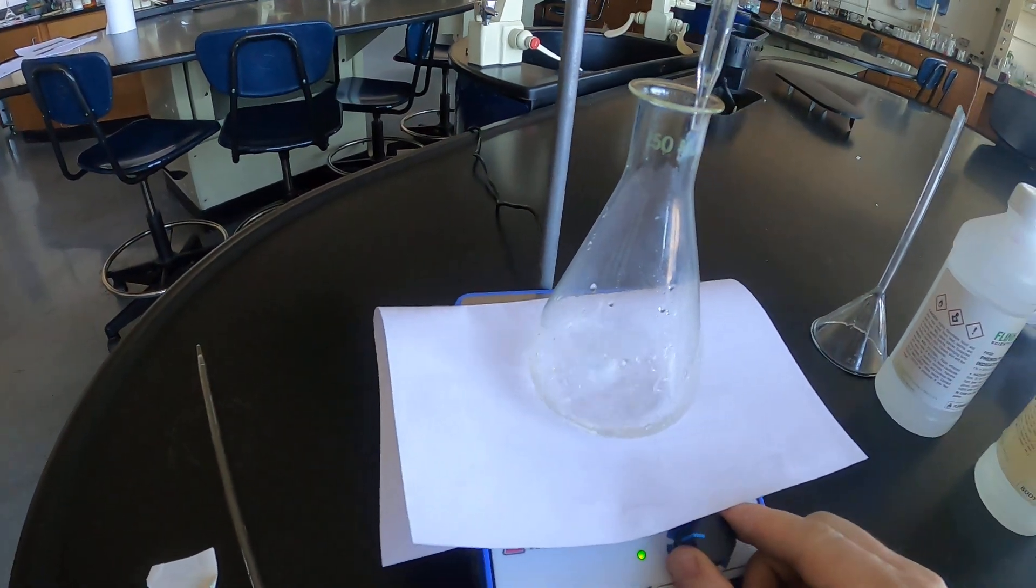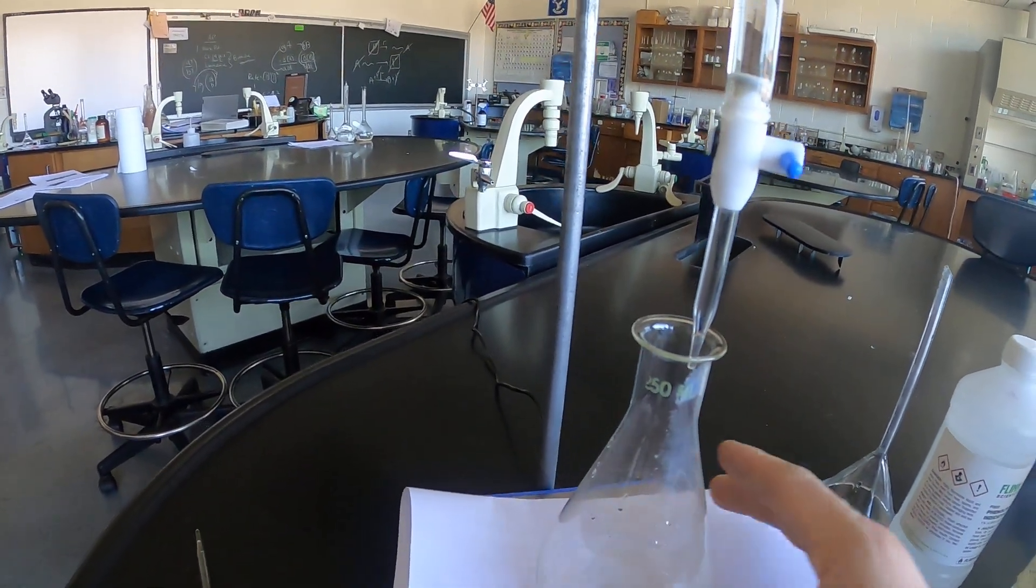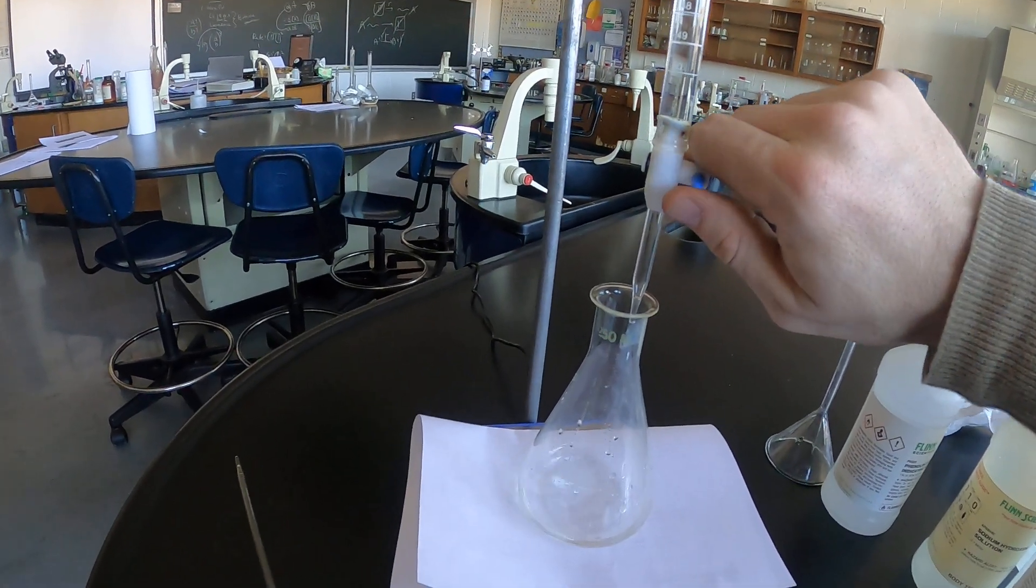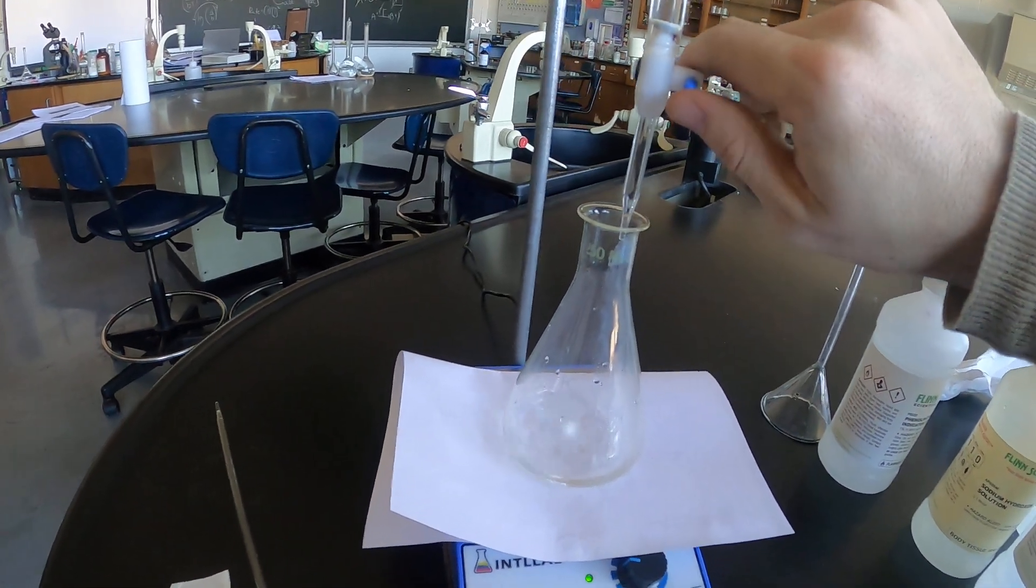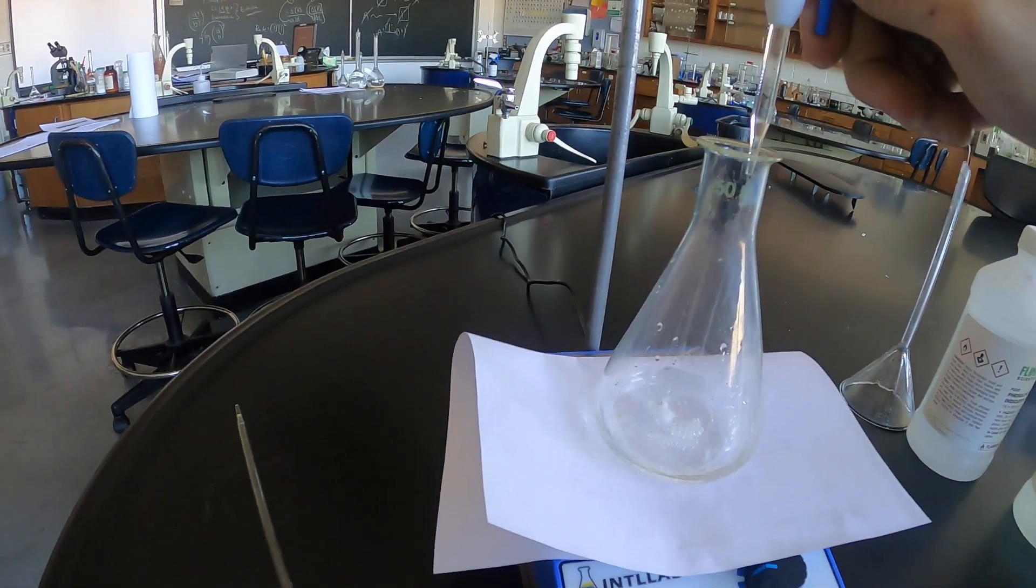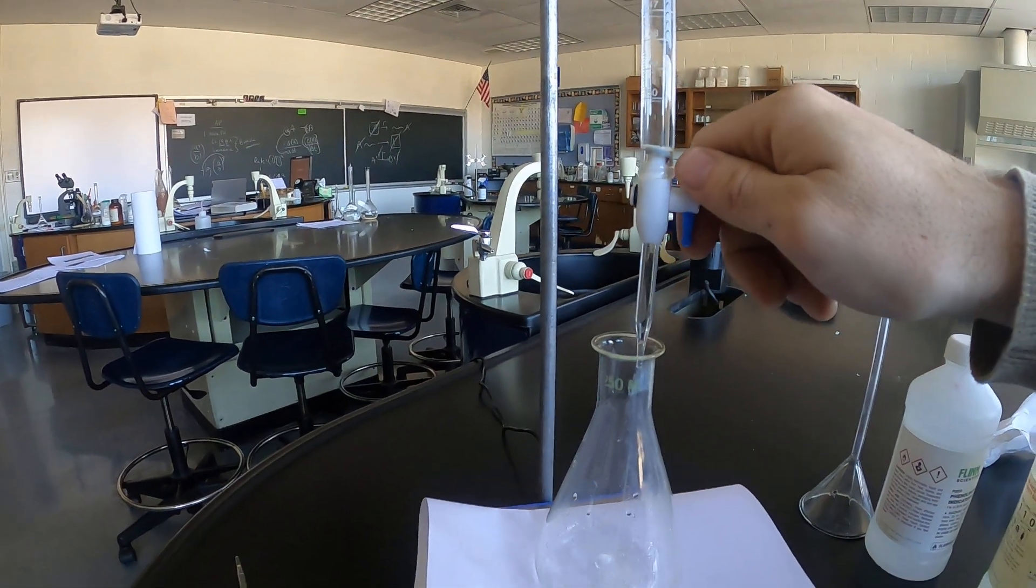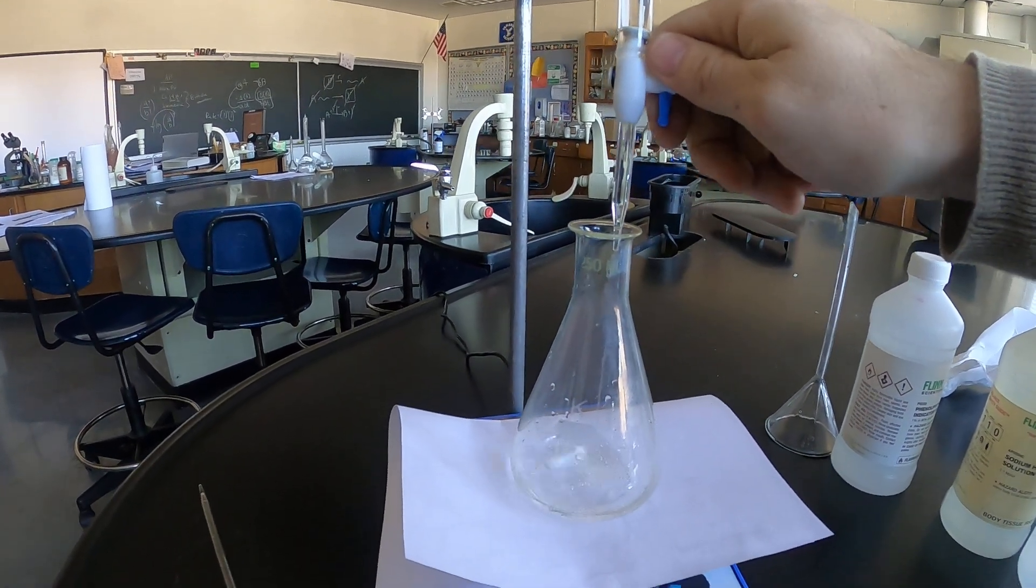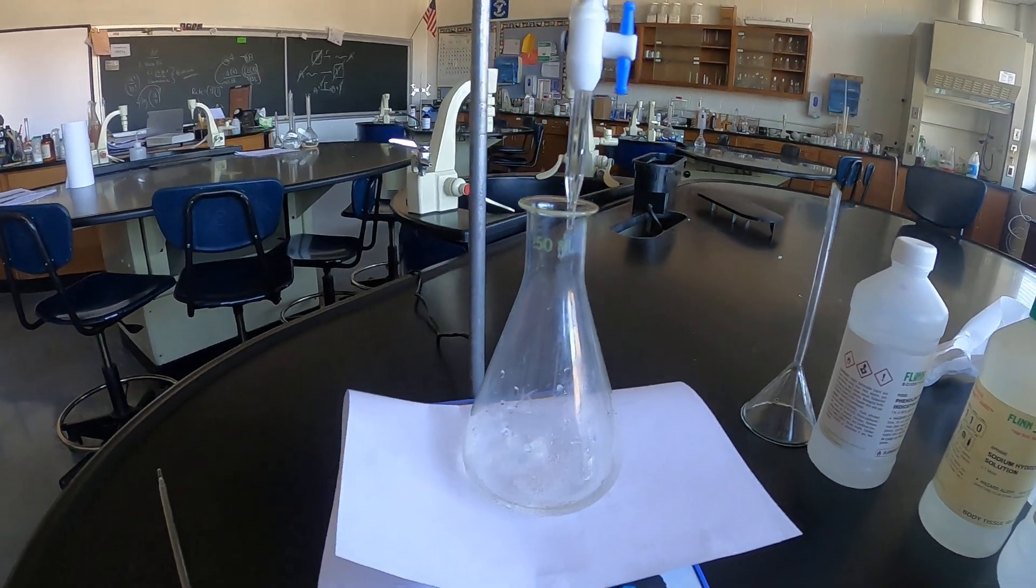So we got everything set up. 20 ml of analyte, burette's filled to zero, there are no air bubbles, I have added the indicator, we're essentially ready to titrate. So like I said I'm going to expect my endpoint to be somewhere around 20 ml but I'm going to titrate quickly at first, slow down at the end. So open my stopcock and letting quite a bit of titrant out.